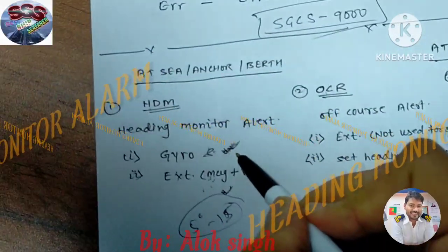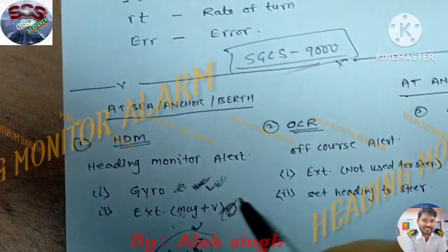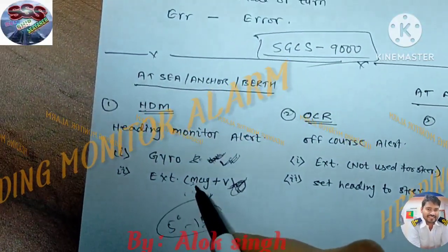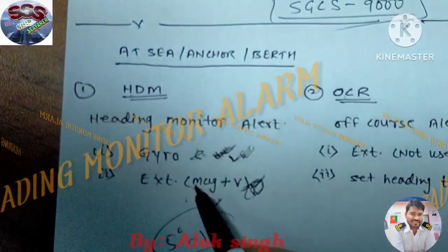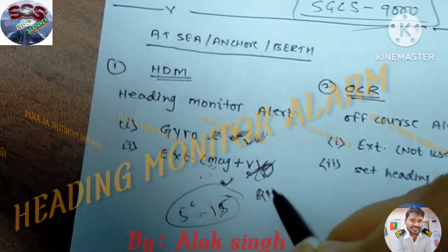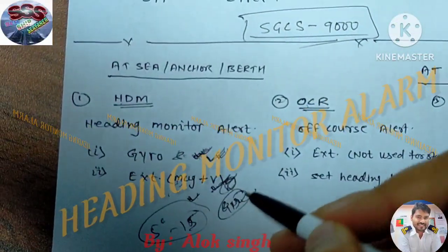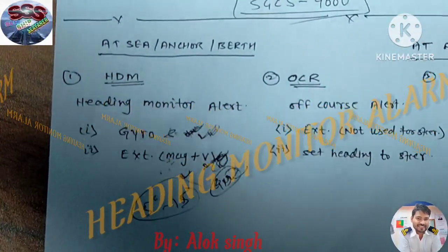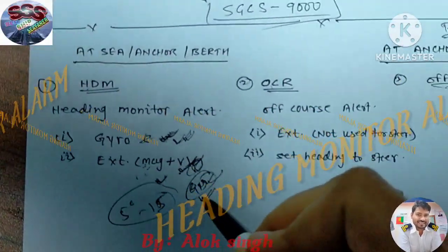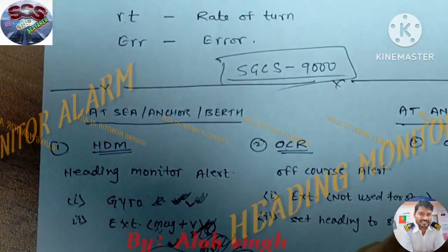The first sensor is gyro (used for steering) and the second is external (not used for steering). The reason it's called 'external' and not just 'magnetic' is that it includes magnetic plus variation. This variation is taken automatically from GPS — but in some places there is too much variation, so the alarm keeps triggering. In that case, you need to change to manual and put the magnetic variation value in by hand.